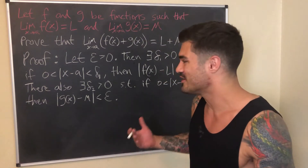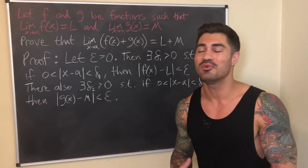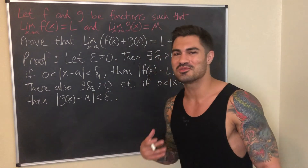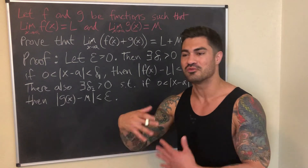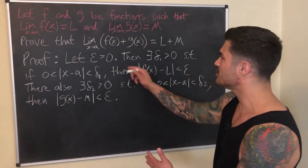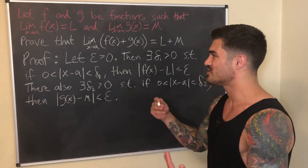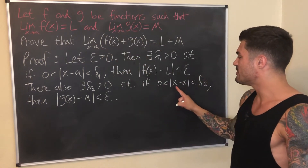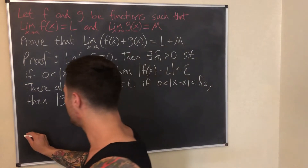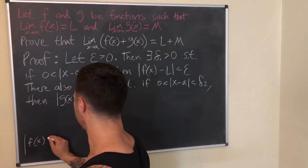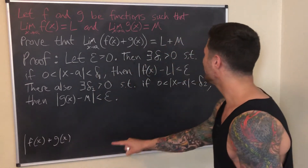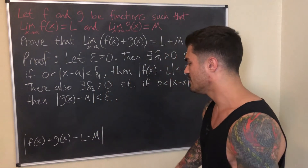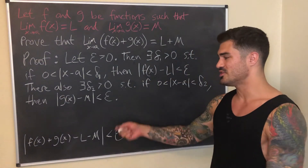Now I've written out the definitions for everything I'm assuming. The next step is to write out what we're trying to show and work backwards. I'm trying to show that this limit exists and equals L + M — specifically, that there exists a Delta such that if zero is less than |x − a| < Delta, it guarantees that |f(x) + g(x) − L − M| < Epsilon. That's what I want to show.